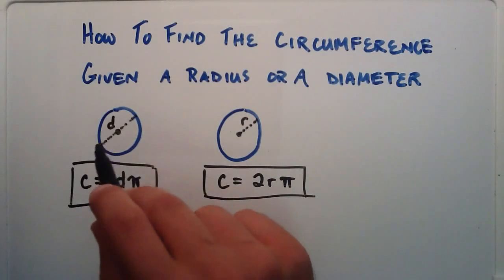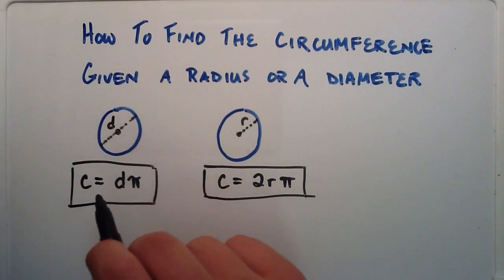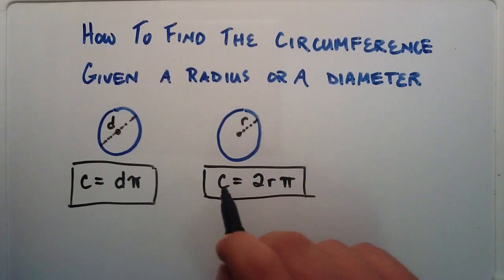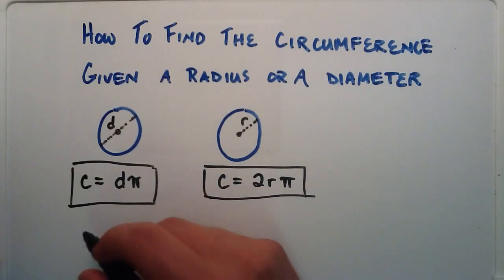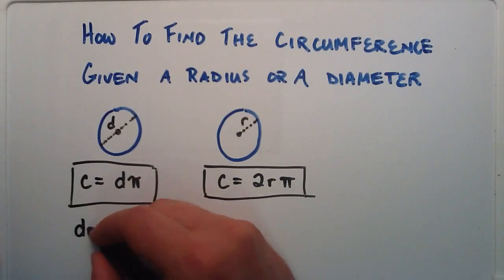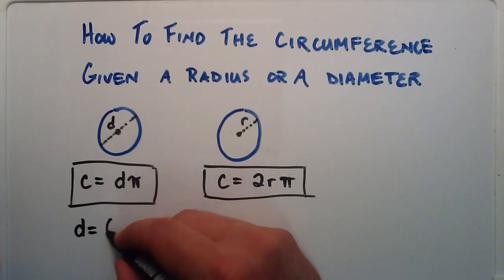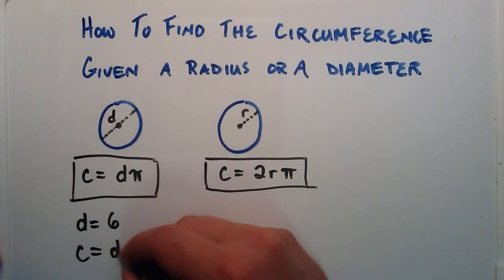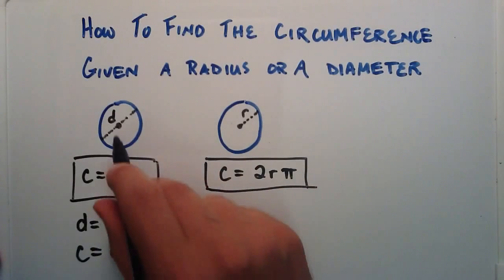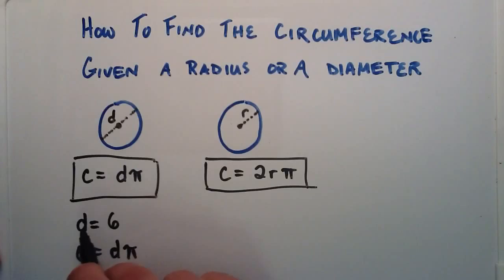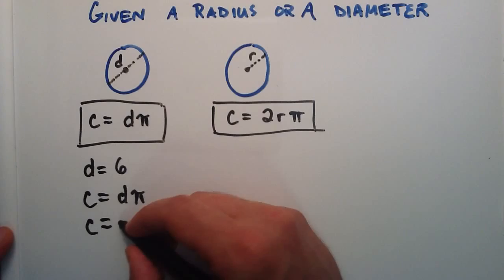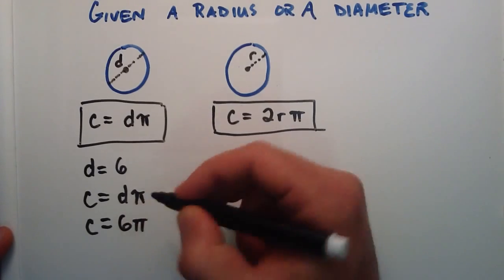So if you have a diameter and you want to find the circumference, you use this equation. And if you have a radius, you use this equation. So let's say that we're given a diameter which equals 6. Then the circumference is simply equal to d times pi. Since we're using the diameter, we use this equation. And d equals 6, so we simply replace the d with a 6. So the distance around a circle with a diameter of 6 is simply 6 pi.